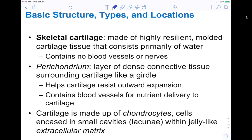Cartilage is made up of chondrocytes, which we've talked about previously. These are cells encased in small cavities — little tiny holes called lacunae — within the jelly-like extracellular matrix.